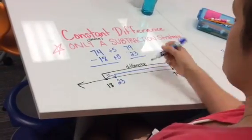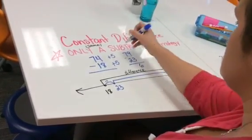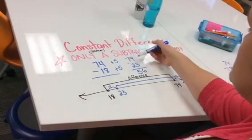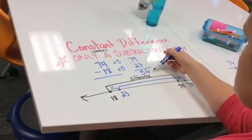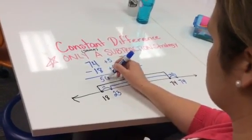I can solve this problem to find what the difference is. 9 minus 3 is 6. 7 minus 2 is 5. So the difference between 79 and 23 is 56, and the difference between 74 and 18 is also 56.